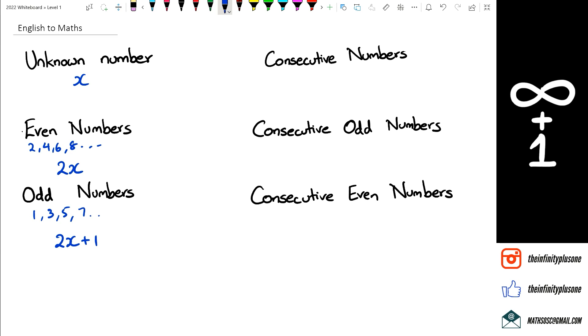Next, we have consecutive numbers. With consecutive numbers, if you think about it like this, you've got 2, 3, 4, so they're just going up by 1.